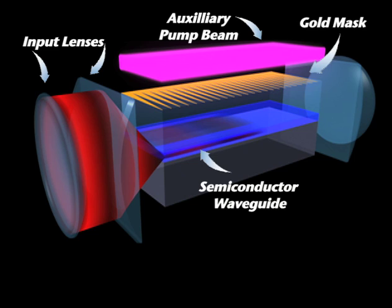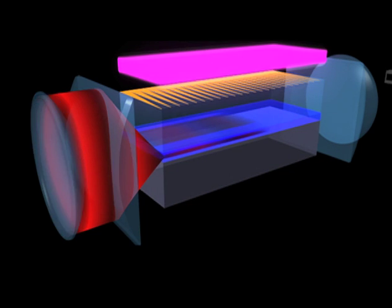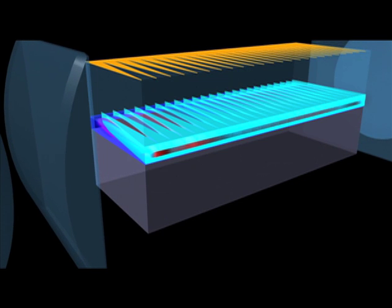A serrated gold mask deposited on top of the waveguide cladding patterns the pump beam profile. Much like a film exposure, the patterned beam then imprints its intensity profile into the refractive index of the waveguide. The signal propagating through the waveguide experiences the patterned refractive index as a series of prisms.